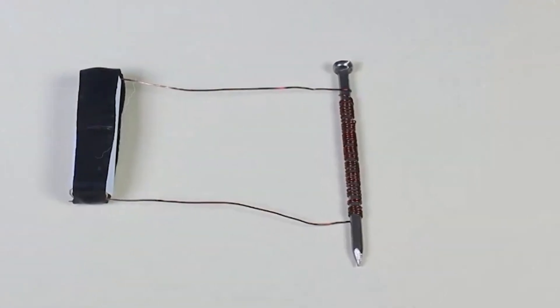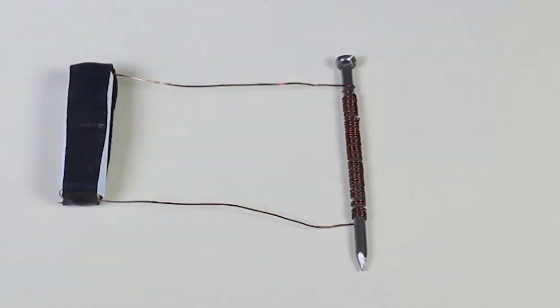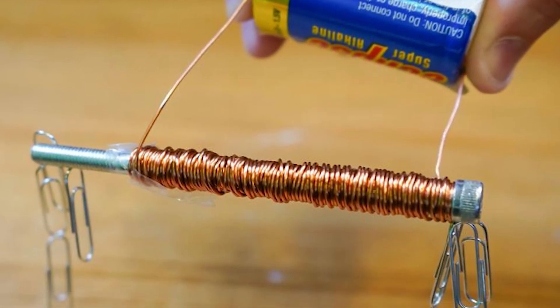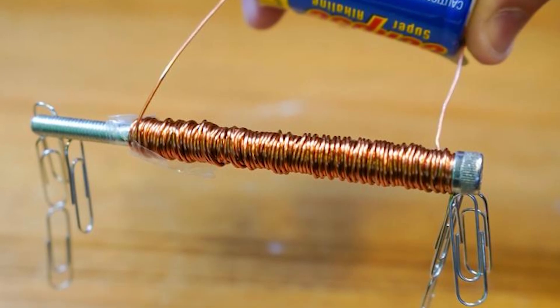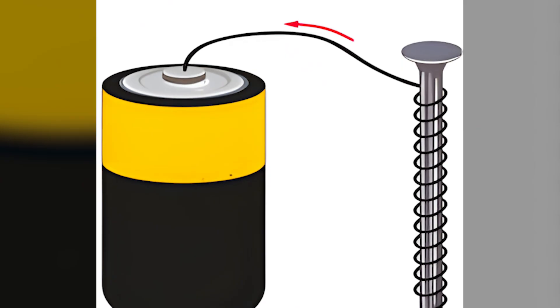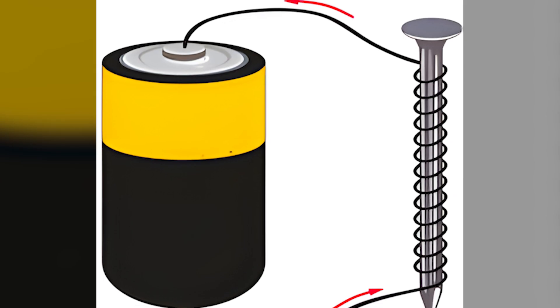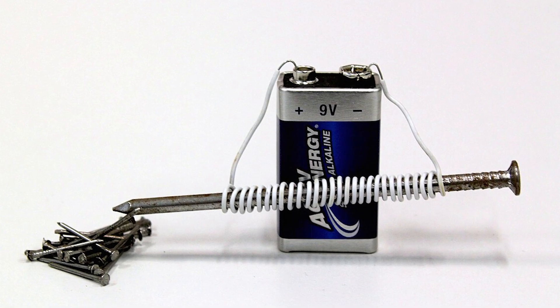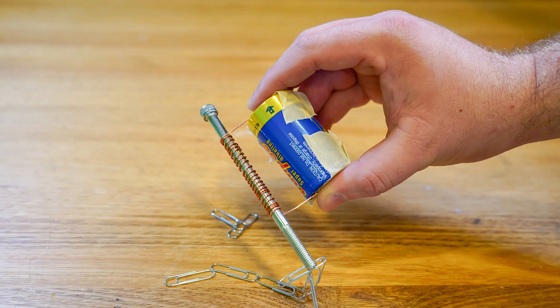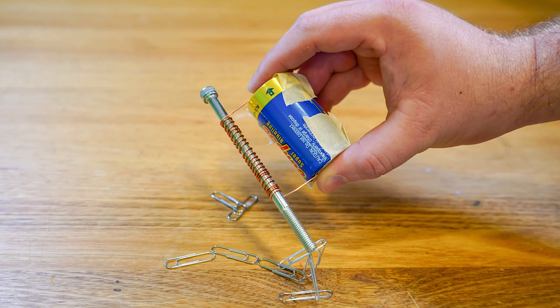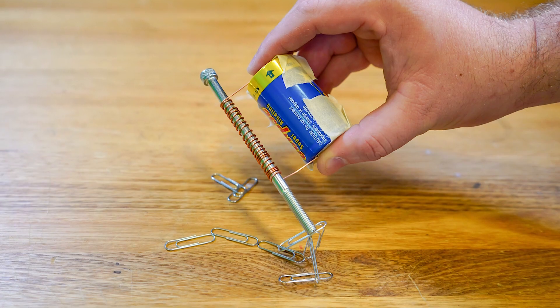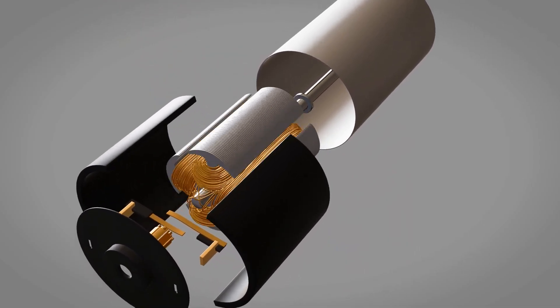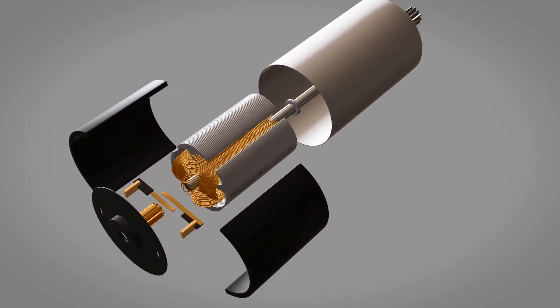So how do we increase that strength? One way is to add more wire loops around the armature. The more wire you wrap around the core, the stronger the magnetic field becomes. This is because more loops mean more electric current passing through the wire, which strengthens the electromagnet's force. Essentially, you're creating a stronger magnet, which generates more torque, causing the motor to spin faster and with more power.